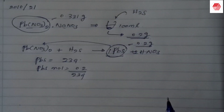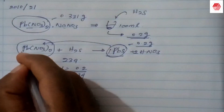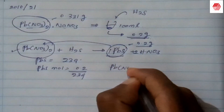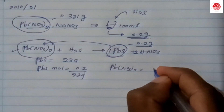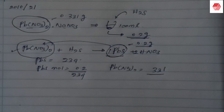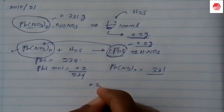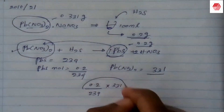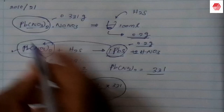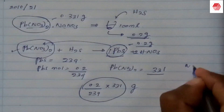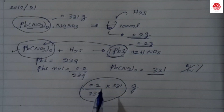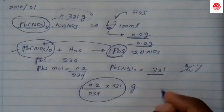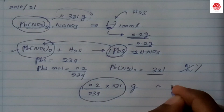Pb(NO₃)₂ — the second version is Pb(NO₃)₂. This is the 1st version, so Pb(NO₃)₂ (times 2) is the 1st. We will be able to do this in the next few days.